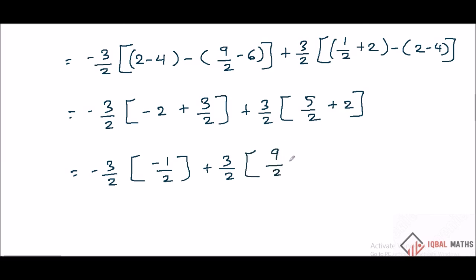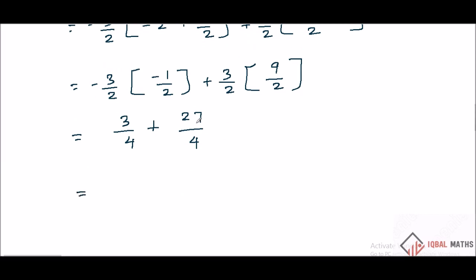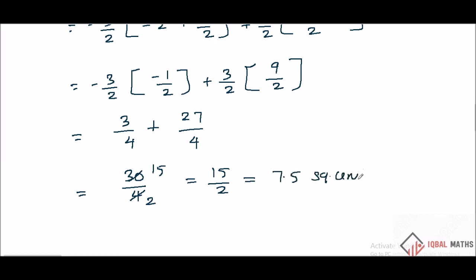9 by 2, minus minus plus 3, 2 into 2 is 4, 3 nines are 27, 2 twos are 4. 27 plus 3 equals 30 by 4. 15 by 2 divided by 2 is 7.5 square units. Approximately, the answer is 7.5 square units.